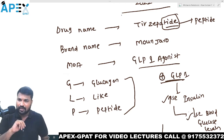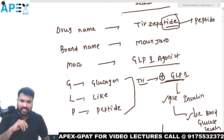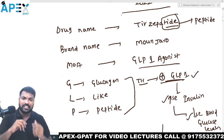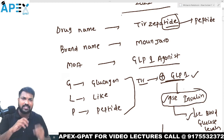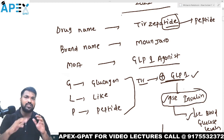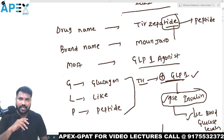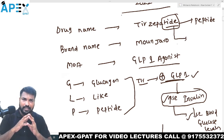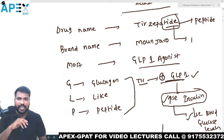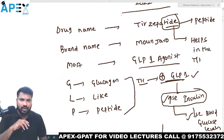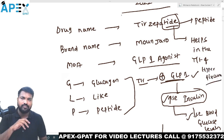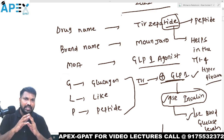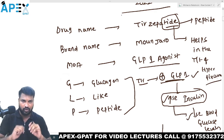So our drug Tirzepatide stimulates GLP-1. When we stimulate GLP-1, ultimately insulin levels increase and blood glucose levels decrease. Finally, Tirzepatide helps in the treatment of hyperglycemia. That is the first drug — Tirzepatide, a GLP-1 agonist.